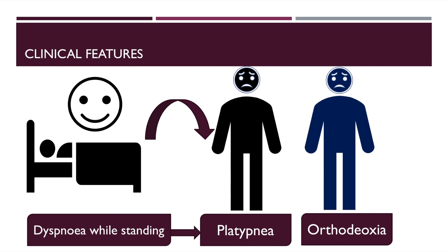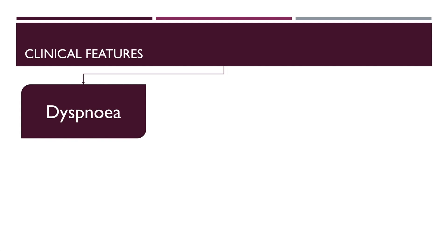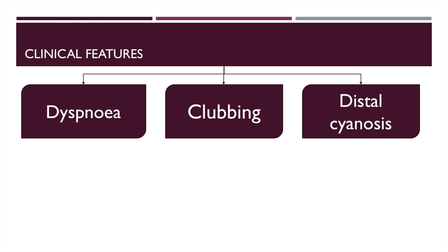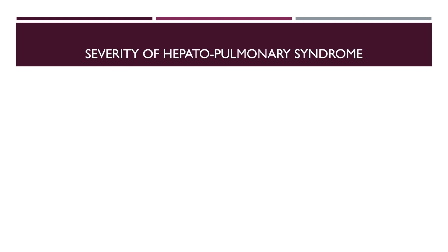Increased gravity-dependent intrapulmonary shunting results in platypnea, which is dyspnea on assuming a standing position, and orthodeoxia. Other clinical features include dyspnea, clubbing, distal cyanosis, and in some patients there can also be cough.